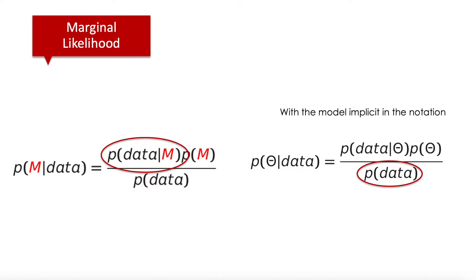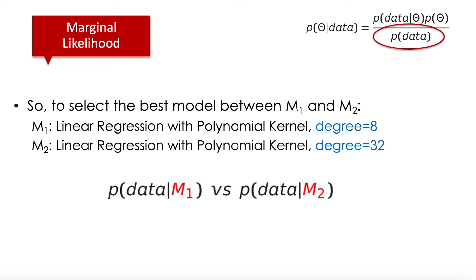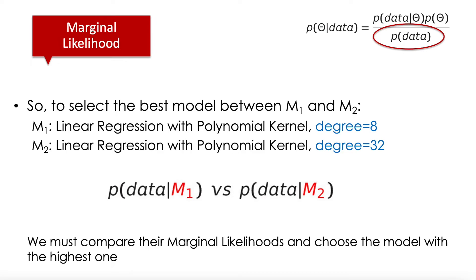That's why the marginal likelihood is used for model selection. If we have two models — for example, two linear regressions with polynomial kernels of different degrees — we just need to calculate the marginal likelihood of each model by passing over all the parameter configurations and choose the one with the higher marginal likelihood. This is a whole research area and you can check different methods for marginal likelihood estimation. In general, it is very expensive to calculate the marginal likelihood exactly, and we need to use approximations.